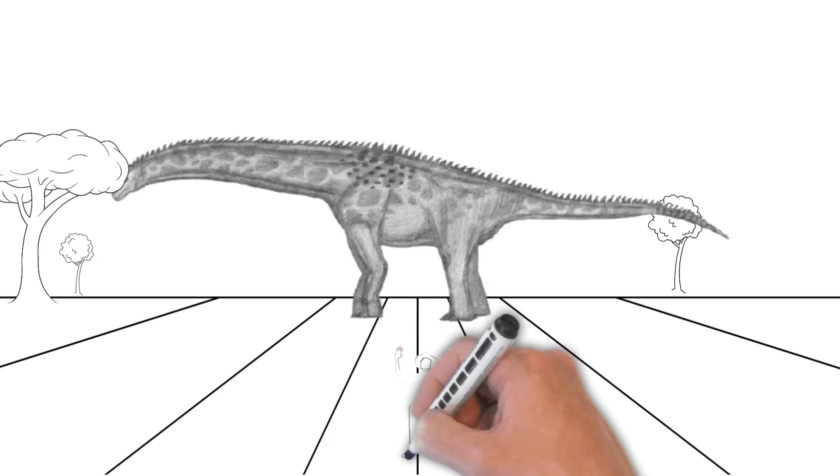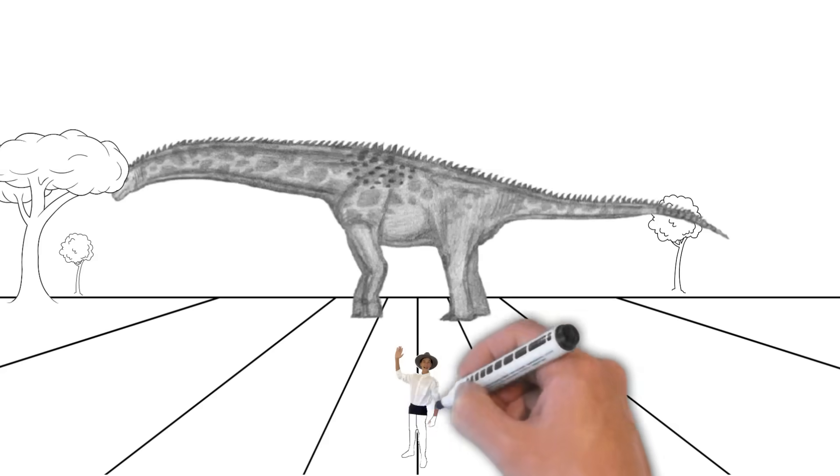Found mainly in the central part of India, Isosaurus was a peaceful giant that likely moved in herds to stay safe from its predators.